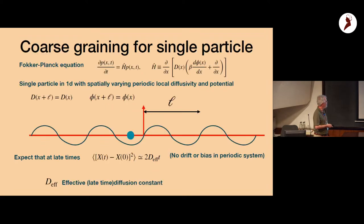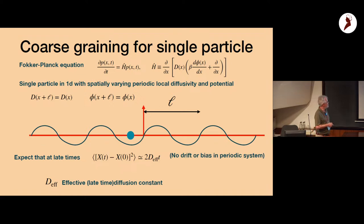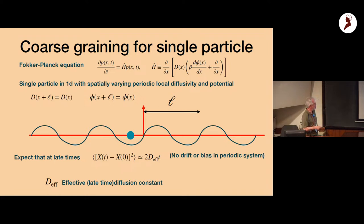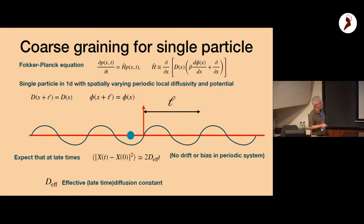Think about a particle in one dimension — this could be in higher dimensions. Imagine a particle not undergoing ordinary Brownian motion but a Langevin equation with a diffusion constant that depends on space. You can have a diffusion constant D(x) and a potential φ varying in space. In one and two dimensions, people use optical traps to generate fluctuating potentials, and heating effects from lasers can also produce variation in the local diffusion constant.